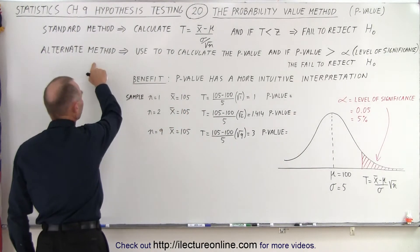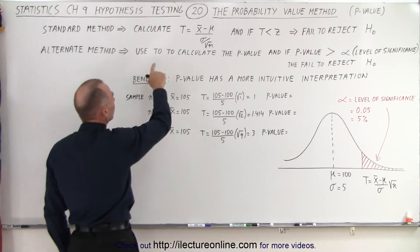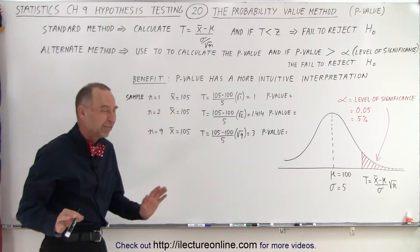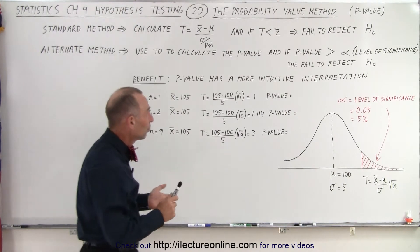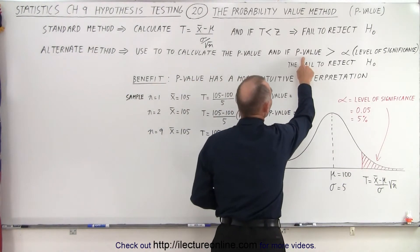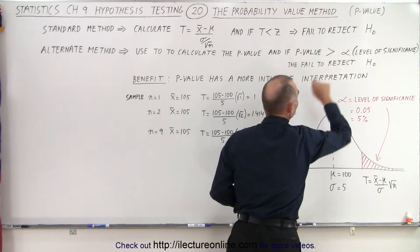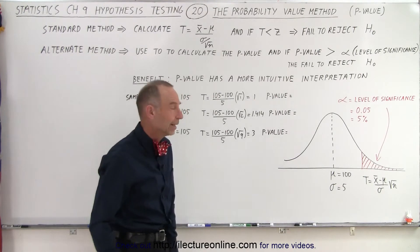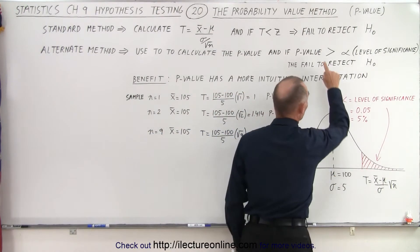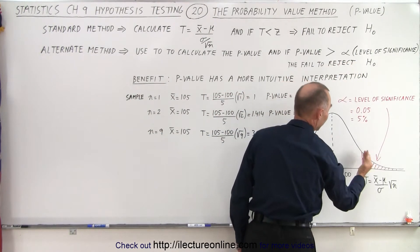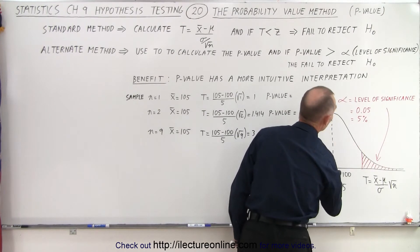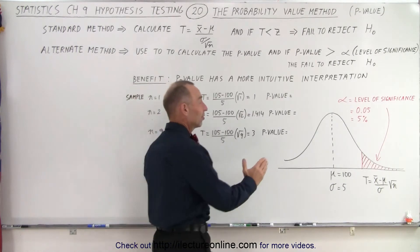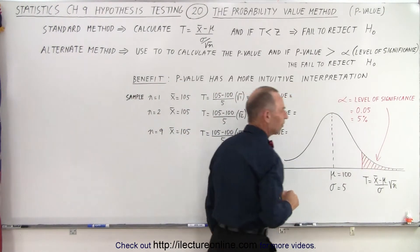We have the alternate method. In the alternate method, we recalculate the p-value. We determined that if the p-value is greater than the level of significance, then we fail to reject the null hypothesis. Again, if the p-value is greater than the level of significance, we end up in the non-critical region, and again we fail to reject the null hypothesis. In order to reject the null hypothesis, we have to be in the critical region.